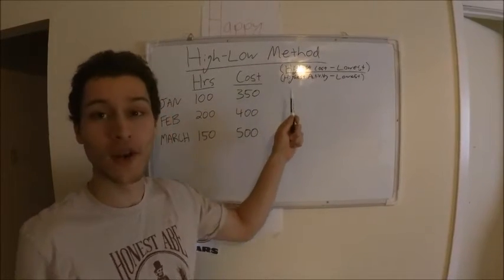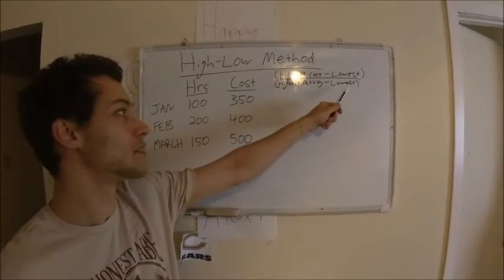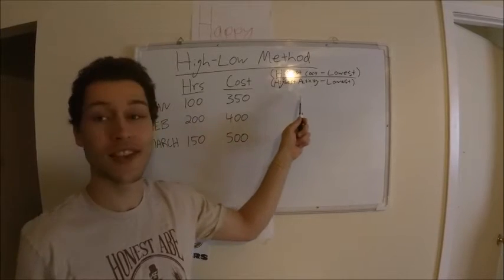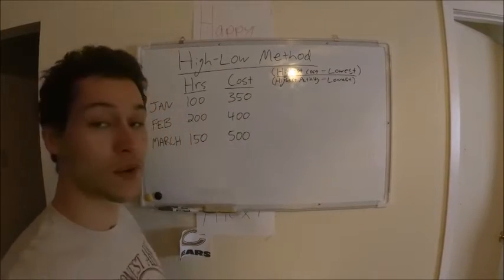The formula for the high-low method is the highest cost minus the lowest cost over the highest activity minus the lowest activity.